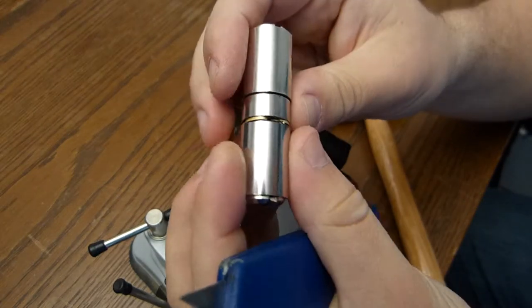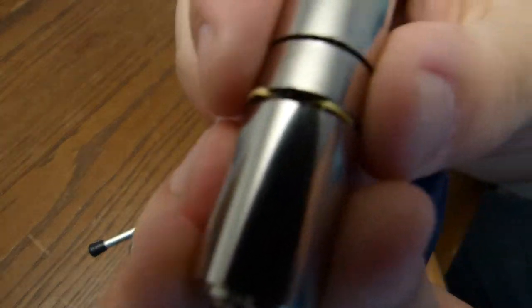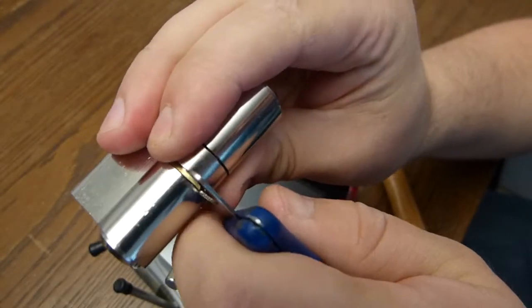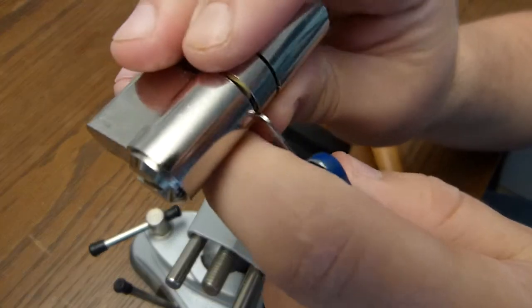We broke the circlip in two parts. And now we can just use the regular tools to disassemble the lock.